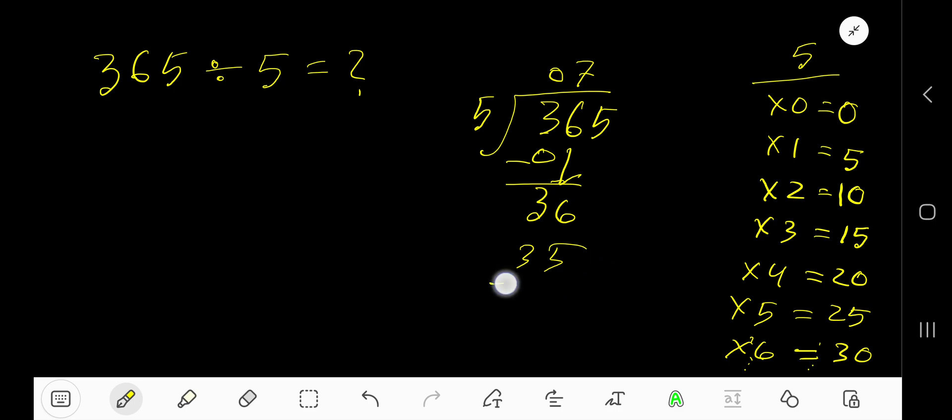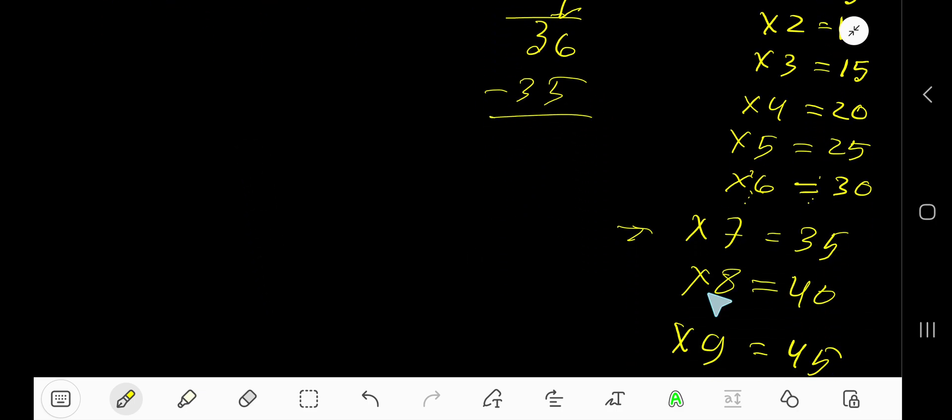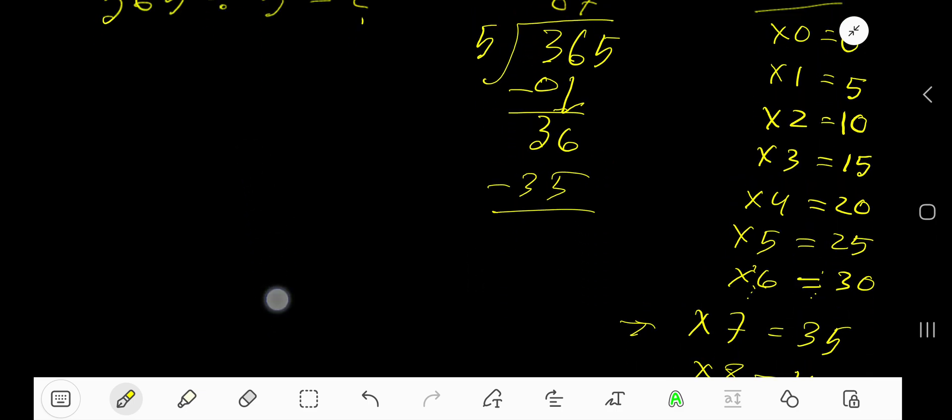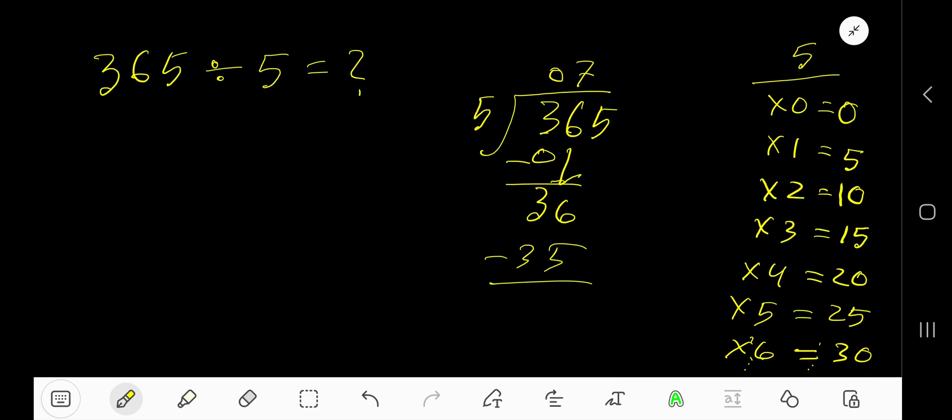7 times 5 is 35. Subtract, you get 1. Bring down this 5 to make 15. 5 goes into 15...